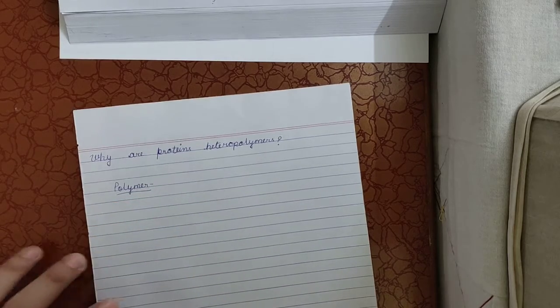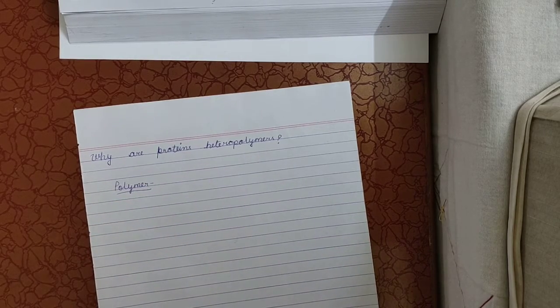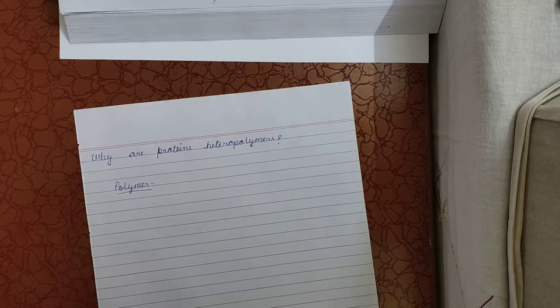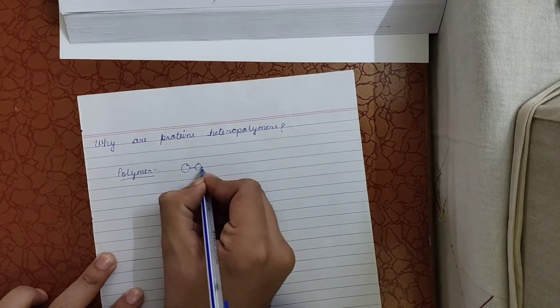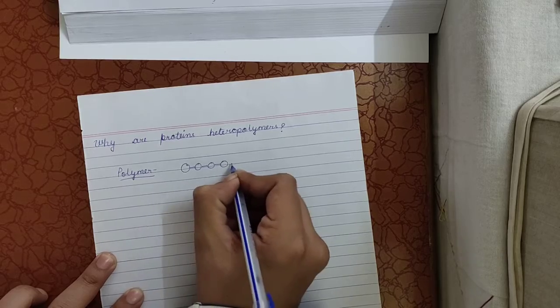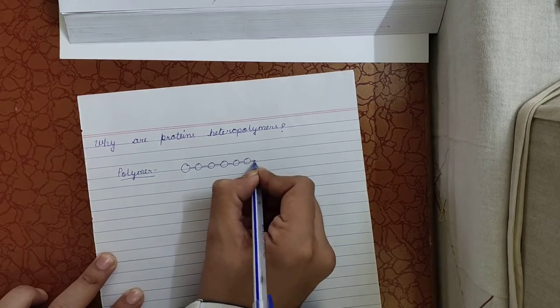A polymer - what do you mean by polymer? By polymer, we simply mean that it is a structure which is made by many repeating units. A structure that is formed by many repeating units is called a polymer.